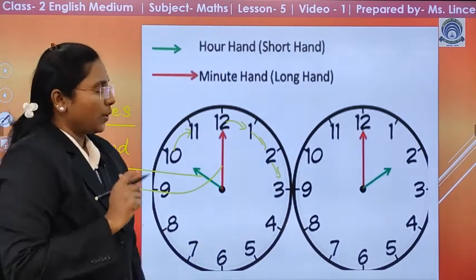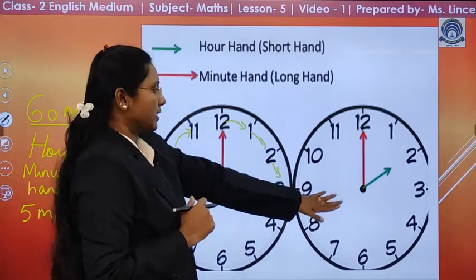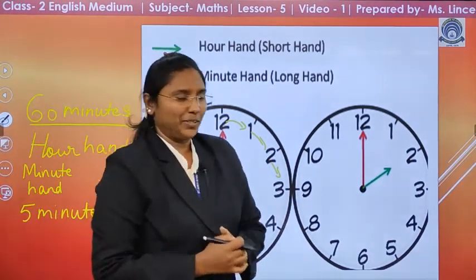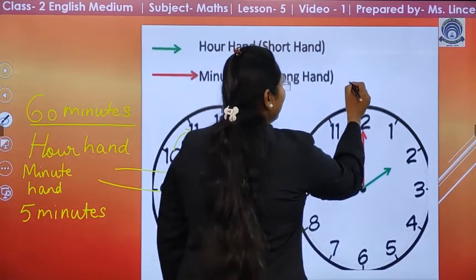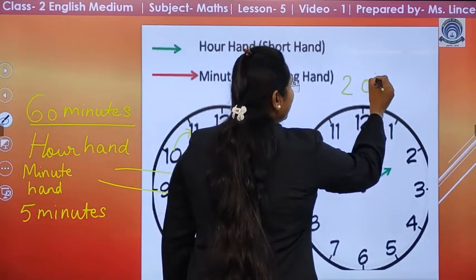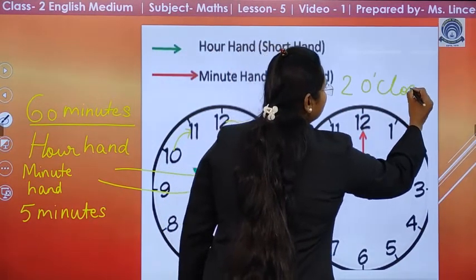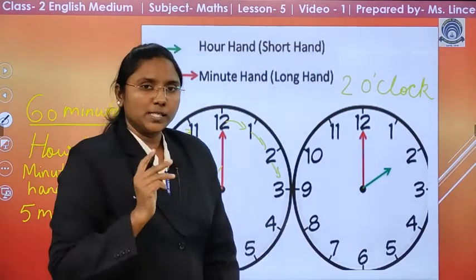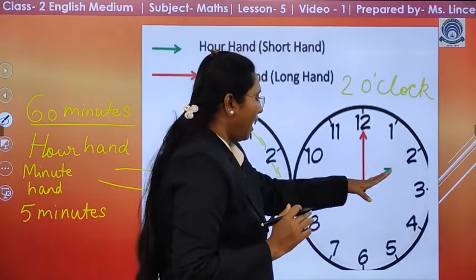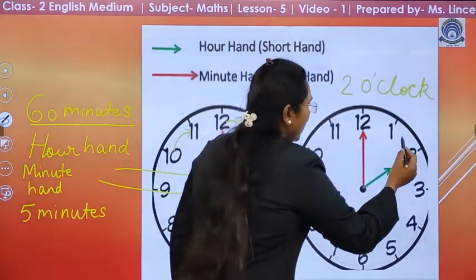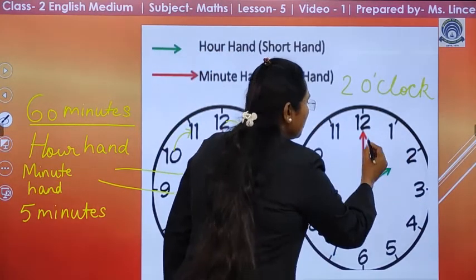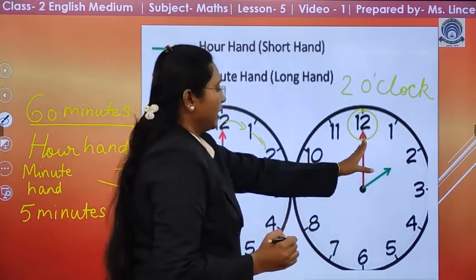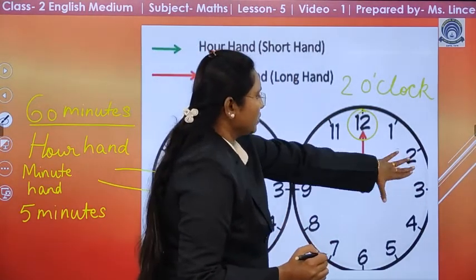Now, who will tell me, what is the time now? Very good, Varun, it is 2 o'clock. When the small hand, that is, hour hand is on the number and the minute hand is on 12, that means, this is 2 o'clock.